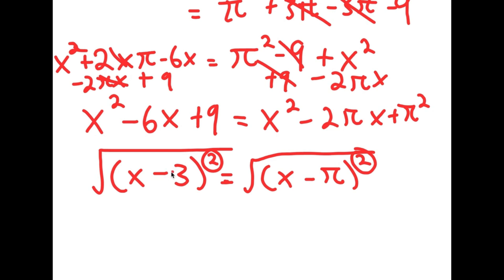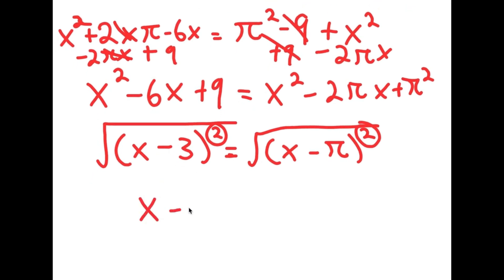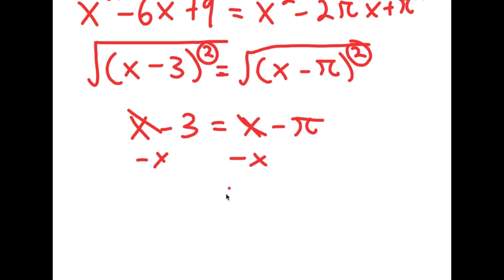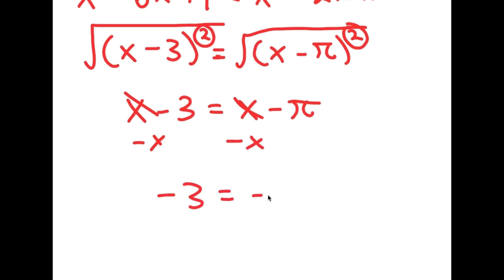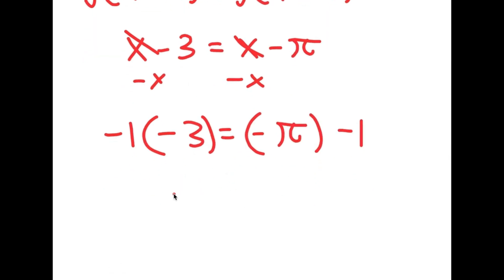So I have x minus 3 squared equals x minus pi squared. Now I want to cancel these two squares, so I'm going to take the square root on both sides. The square root of x minus 3 squared equals x minus 3, and the square root of x minus pi squared equals x minus pi. So I get x minus 3 equals x minus pi. Subtracting x on both sides, I get negative 3 equals negative pi, and multiplying both sides by negative 1, I get pi equals 3.